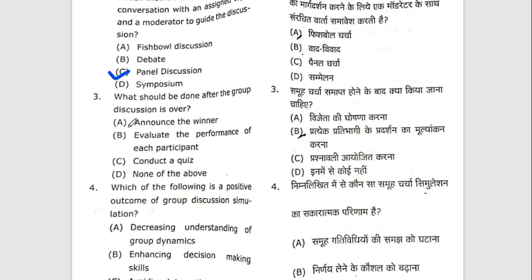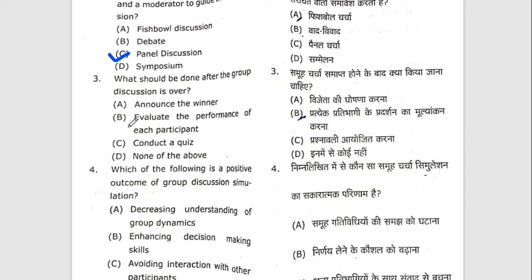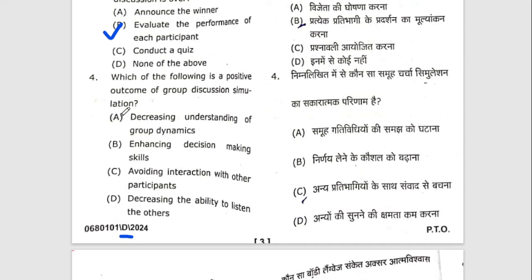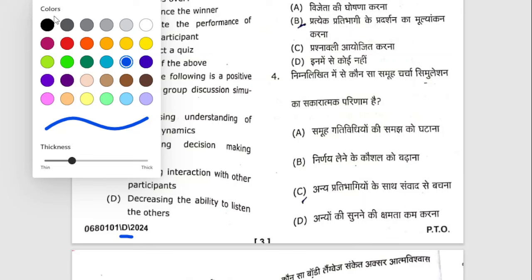Third question: what should be done after the group discussion is over? The right option will be B — evaluate the performance of each participant. Fourth question: which of the following is a positive outcome of group discussion? The right answer will be B — enhancing decision-making skills.